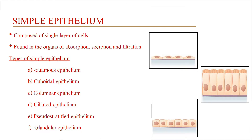Simple epithelium is made up of a single layer of cells and is found in organs involved in absorption, secretion, and filtration. It is divided into squamous, cuboidal, columnar, ciliated, pseudo-stratified, and glandular epithelium.